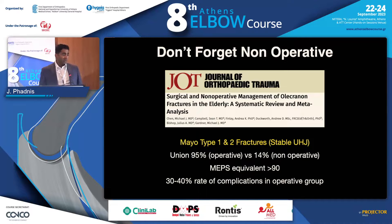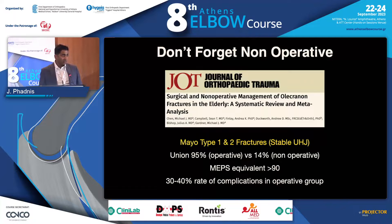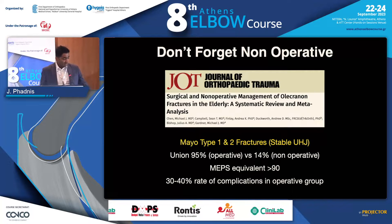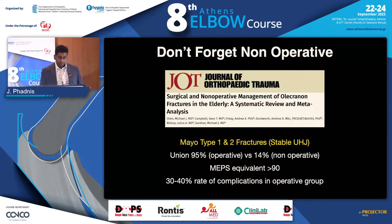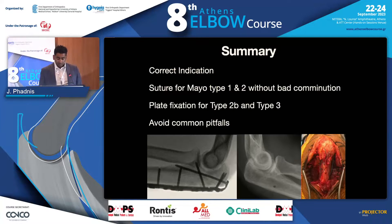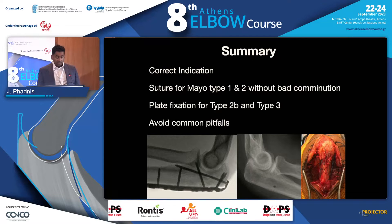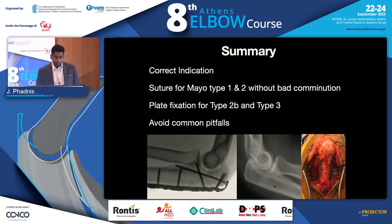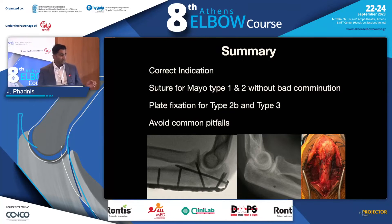Don't forget non-operative treatment — the results are amazing in older patients who don't require their extensor function, but only for stable type 2 fractures. In summary: choose the correct indications — suture or tension band wiring for Mayo type 1 and 2, and plate fixation for type 2 and 3. Hopefully I've given you some common pitfalls and tools to avoid. Thank you.